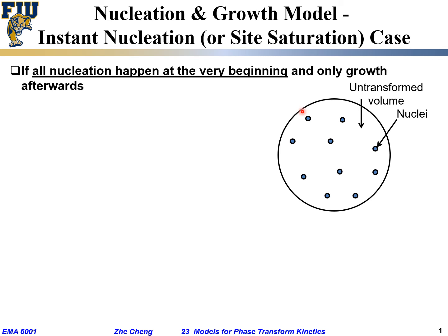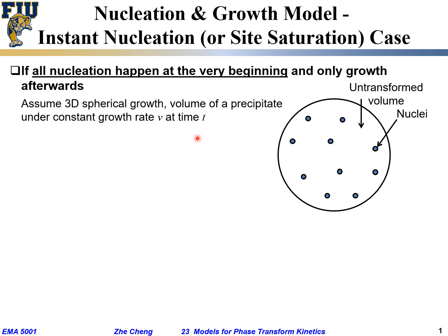Because we are talking about instant nucleation, at time t = 0 all the small nuclei appear — site saturation means every possible site forms a nucleus. After that there is no more nucleation, only growth, so each individual nucleus gets larger and larger.